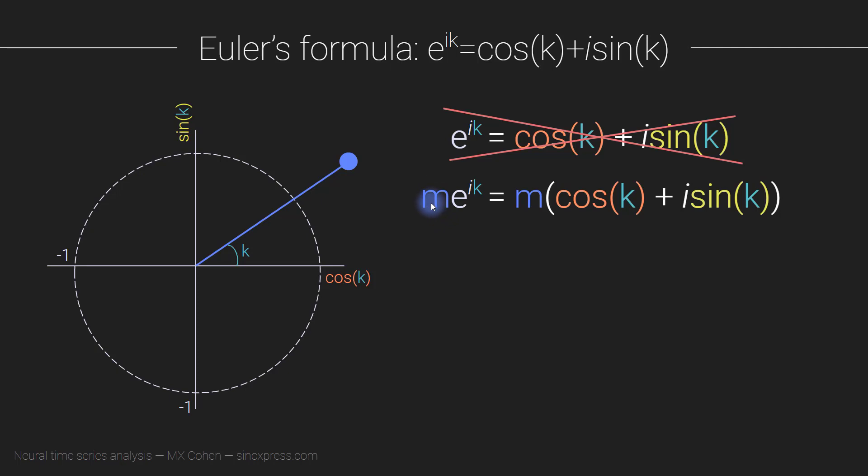So m is the magnitude is the distance away from the origin. And you can see here that, you know, we kind of already have the m here, it's just implicit, and it's set to one. So here we have m e to the ik equals m cosine k plus i sine k.